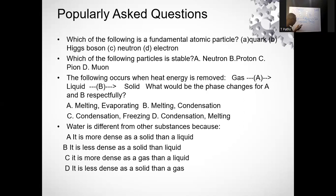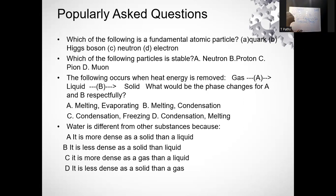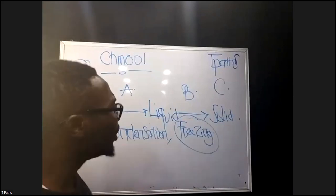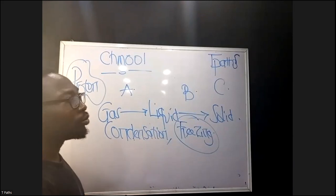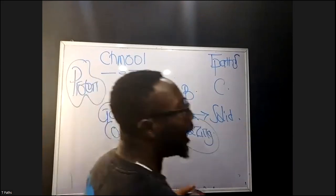Water is different from other substances because — looking at the options — it is not more dense as a solid than a liquid. The correct answer is that water is less dense as a solid than as a liquid. So when water is in solid form, it is less dense compared to liquid water.